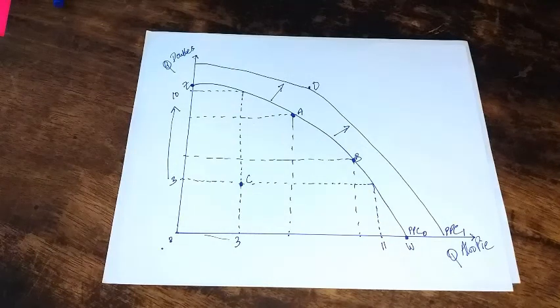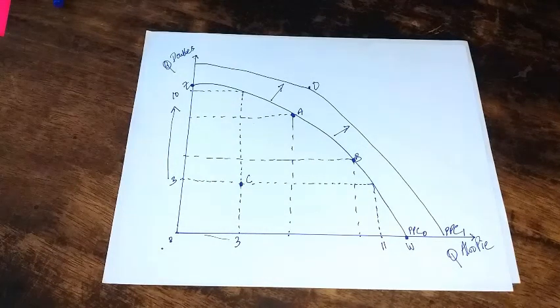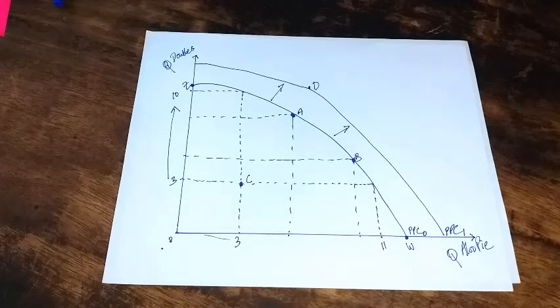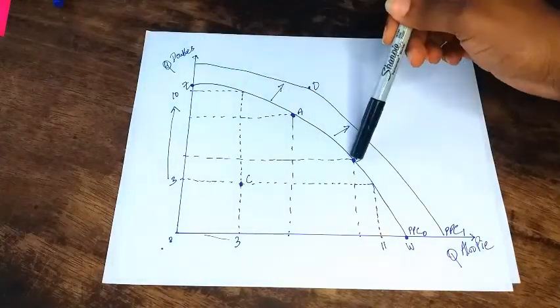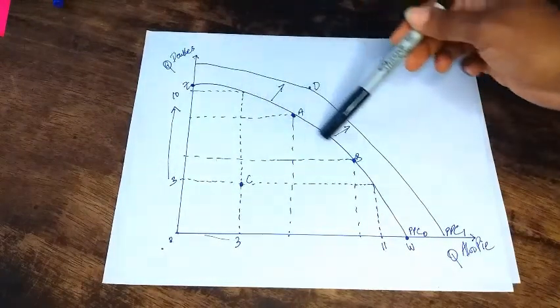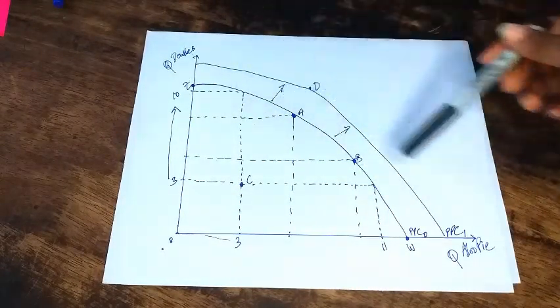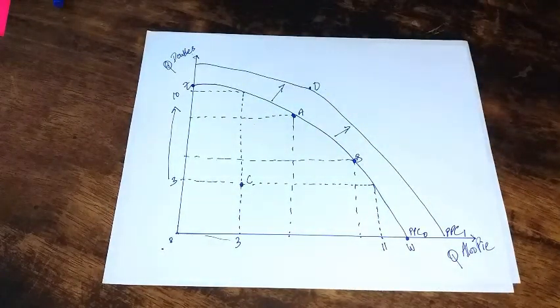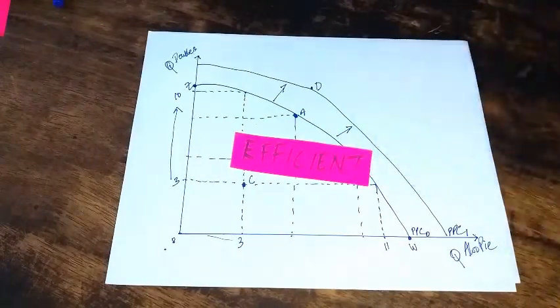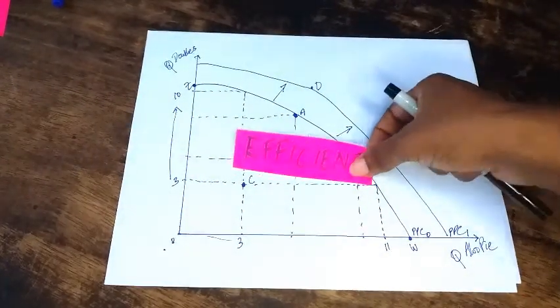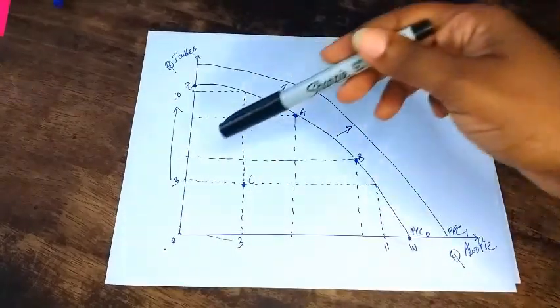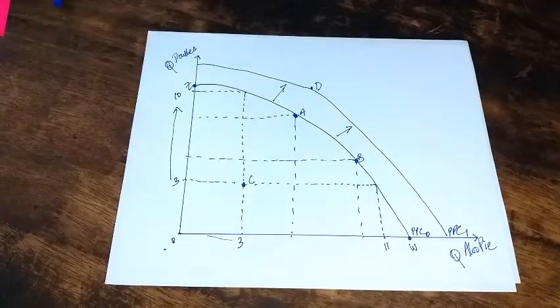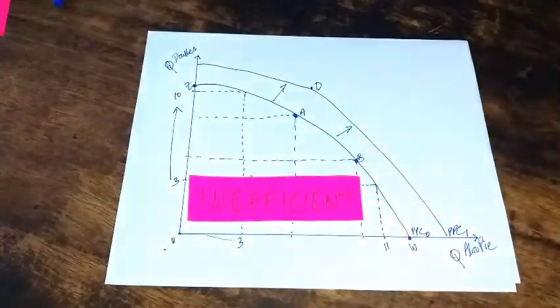But what I really want you all to remember from this example is that when we have points on the PPC like Z, A, B, W, or any other points along the curve, those points are said to be efficient. Points such as C, which are within the boundary, are attainable but are inefficient.